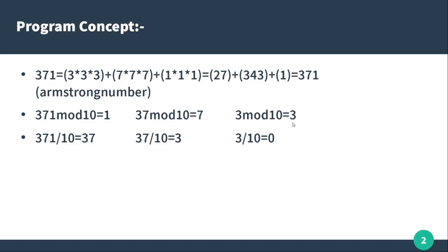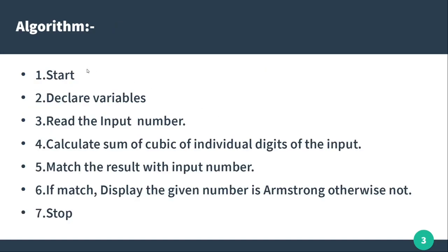We will add 3 values: 1 cubed + 7 cubed + 3 cubed using this basic concept technique. And again 3 divided by 10 gives 0, so we will get 0 and stop the loop. Now the algorithm is: Start, declare variables, if you want to check an Armstrong number, calculate the cube of individual digits of the input, and if the result matches the input it is an Armstrong number, otherwise it is not. Stop.